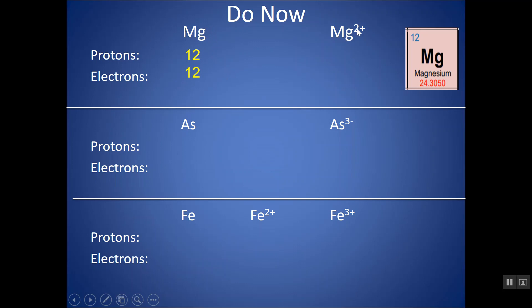For Mg2+, to get that 2 plus charge, I must have lost electrons. The protons are still the same — 12 — because if I were to lose protons, this would no longer be Mg. Remember, the atomic number has to stay the same. I can now have 2 less electrons, so there would be 10 electrons. Notice that I have 2 more protons than electrons, and that's why I have a 2 plus charge overall.